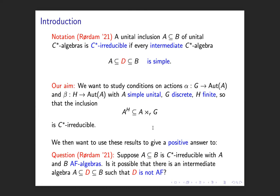The motivation is to give a positive answer to Michael's question: suppose we have a C*-irreducible inclusion of two unital C*-algebras A and B, so that both are AF algebras — inductive limits of finite-dimensional C*-algebras. The question was: is it possible that there is an intermediate algebra D which is not an AF algebra? So if we have a very tight C*-irreducible inclusion of one AF algebra into another, can there be an algebra in between which is not AF? We will show that this is indeed possible.